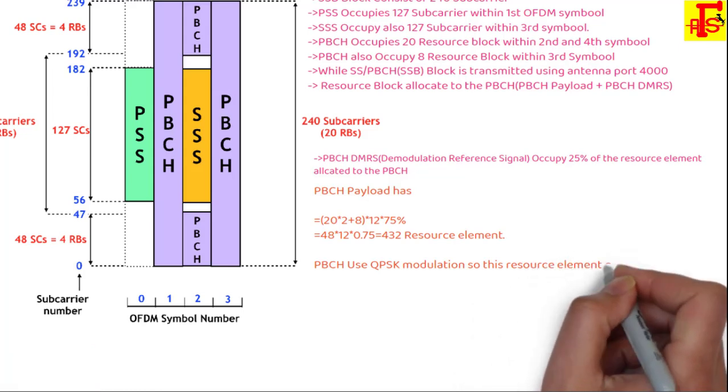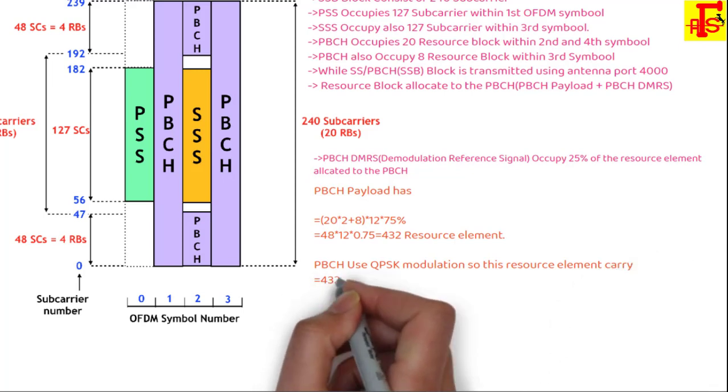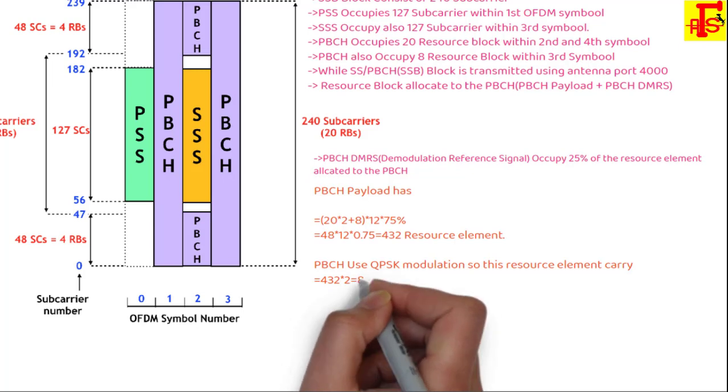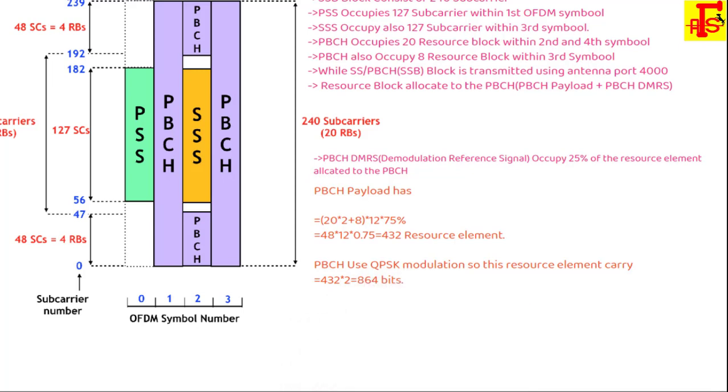PBCH uses QPSK modulation, which allocates 2 bits per symbol. So 432 times 2 equals 864 bits utilized for PBCH.